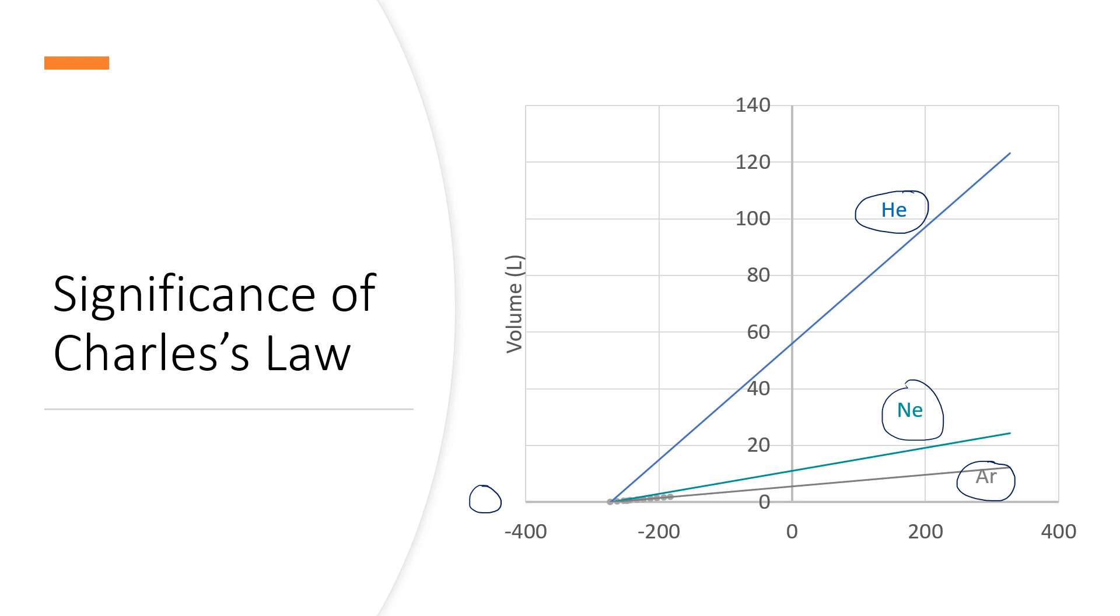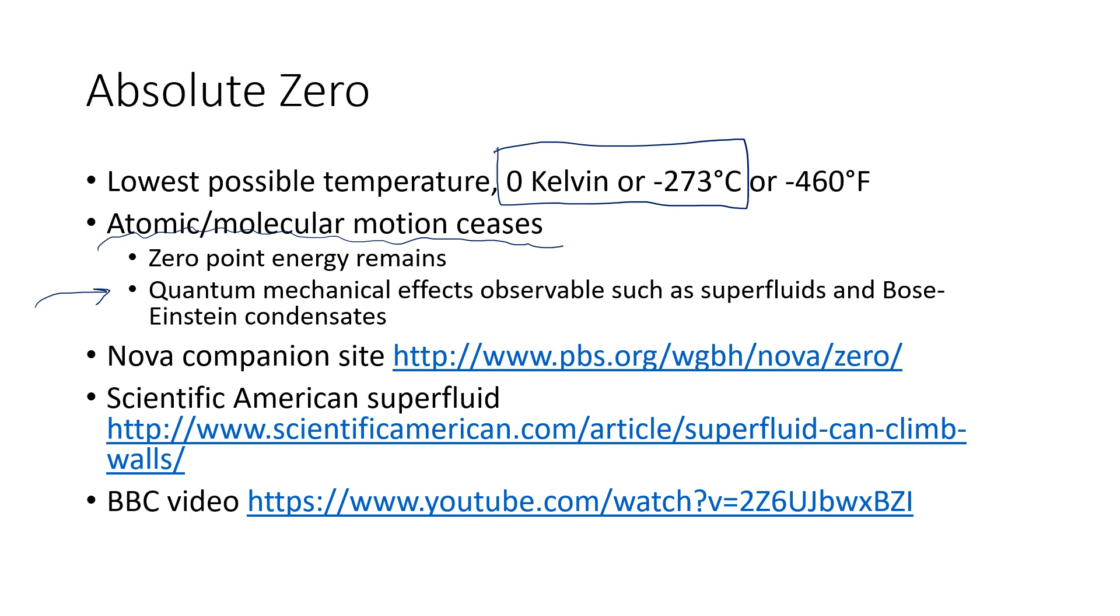Some really cool things happen down at absolute zero. One of them is that all atomic and molecular motion ceases. So normally, even in the solid phase, particles are moving. They're not moving much. They're vibrating around their equilibrium position. They're rotating. They're doing things like that. But all of that motion just stops when we hit absolute zero. And some really strange effects emerge, such as the substances turning into superfluids and Bose-Einstein condensates. You can get more information about these things at the two websites that are listed there. But I would really like for you to spend a moment and go and watch this video. It's just amazing to see the things that superfluid helium can do.